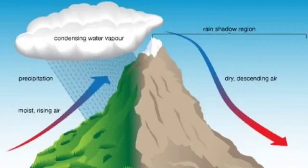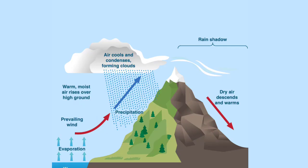Another type of rainfall is orographic rainfall, which occurs because of the presence of some barrier or orographic barrier in the path of the wind. This forces the wind to rise high, leading to condensation and rainfall on the windward side of the mountain. The windward side, which faces the wind, receives higher rainfall.